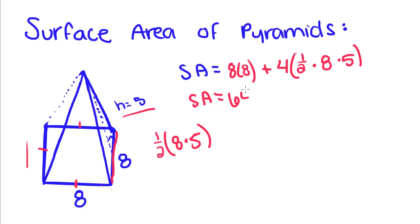8 times 8 is 64, plus one-half times 8 is 4. 4 times 5 is 20. 20 times 4 is 80. So we get 64 plus 80. Surface area equals 144. Pretend they told us this was in inches, so we have 144 inches squared.